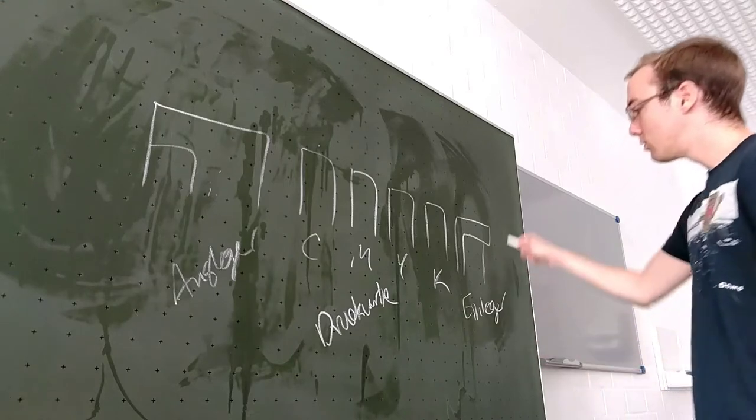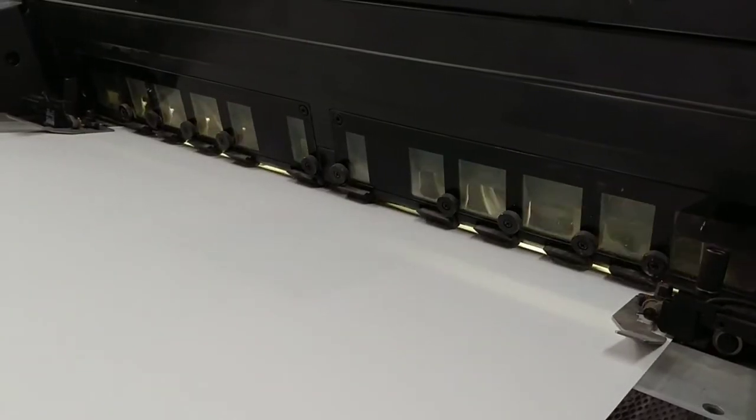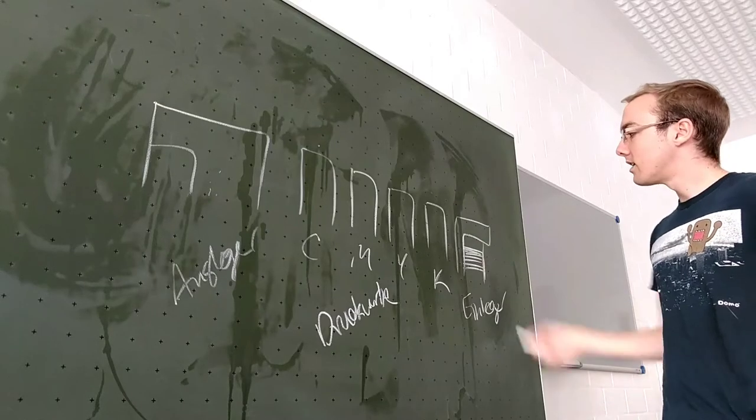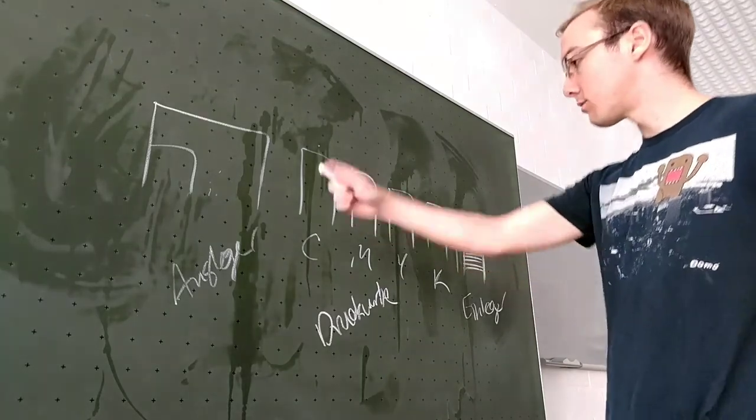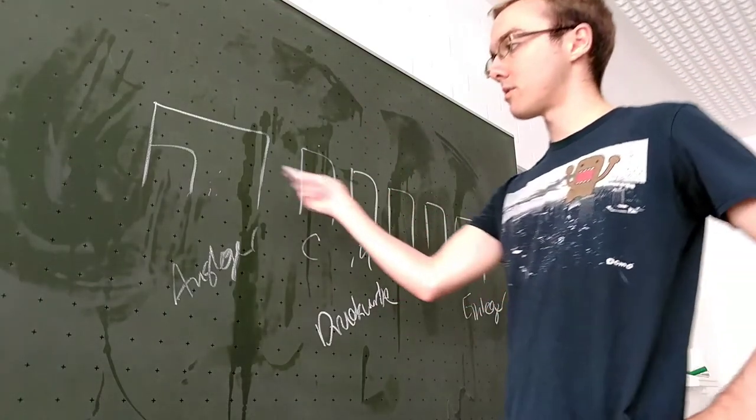And this Einleger uses suction cups to pick paper up from a really large crate of paper and then sucks them into the machine and takes them through the Druckwerke and puts them in the Ausleger.